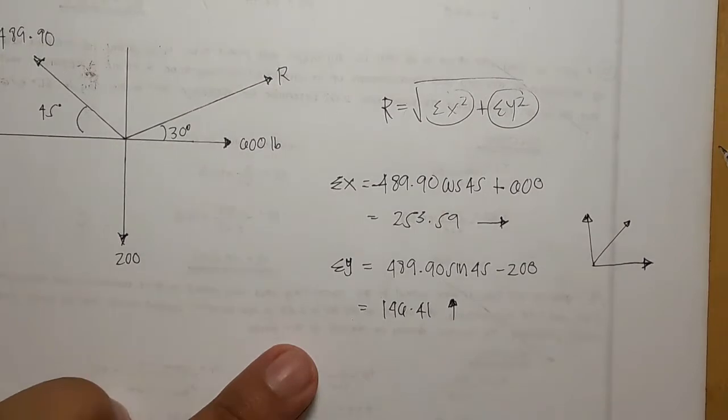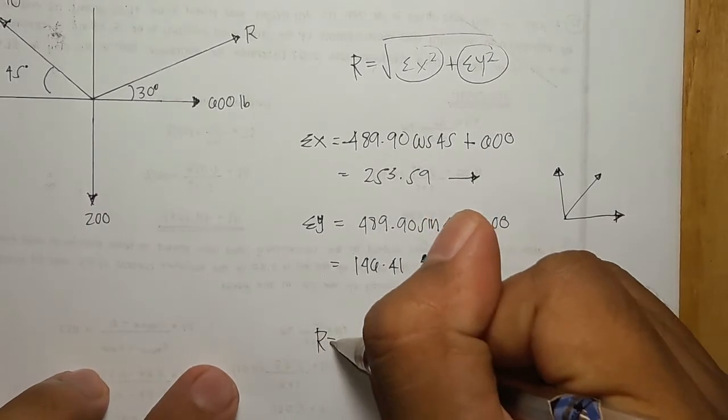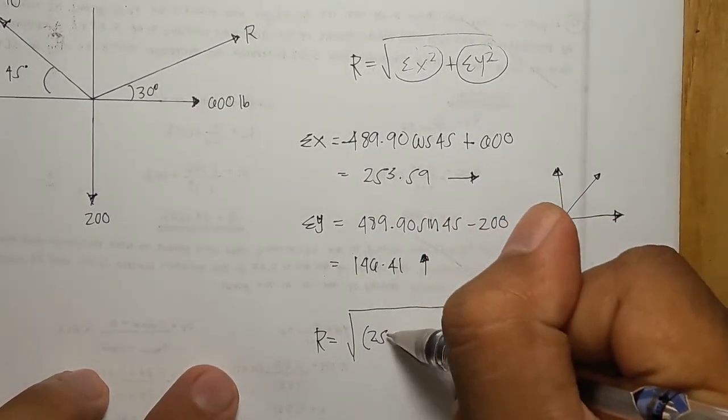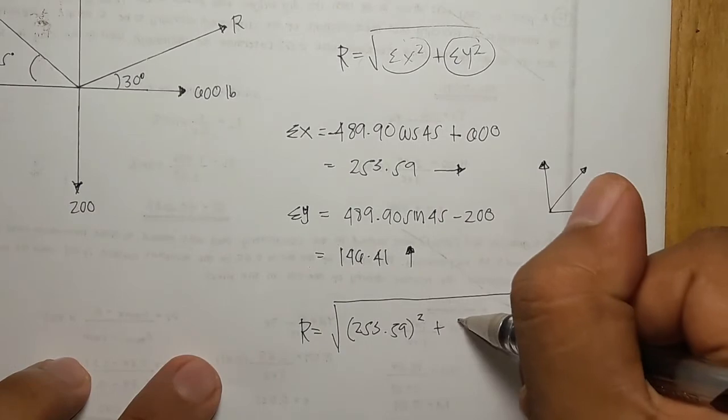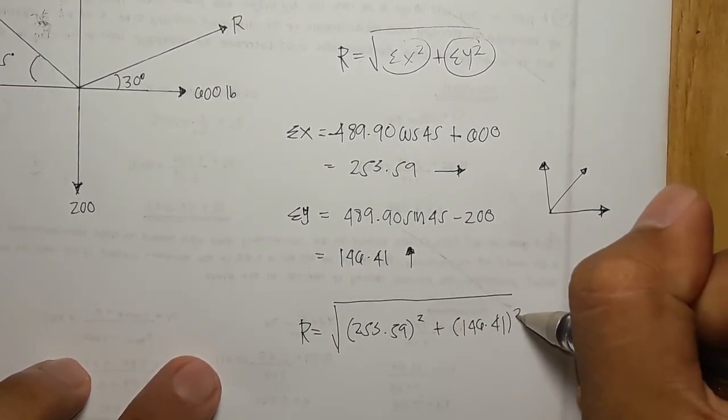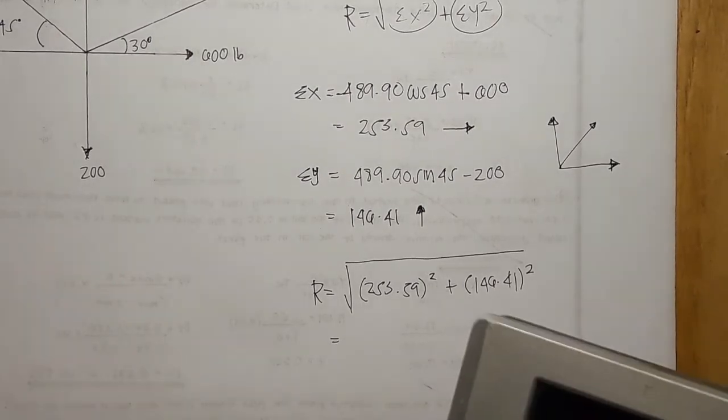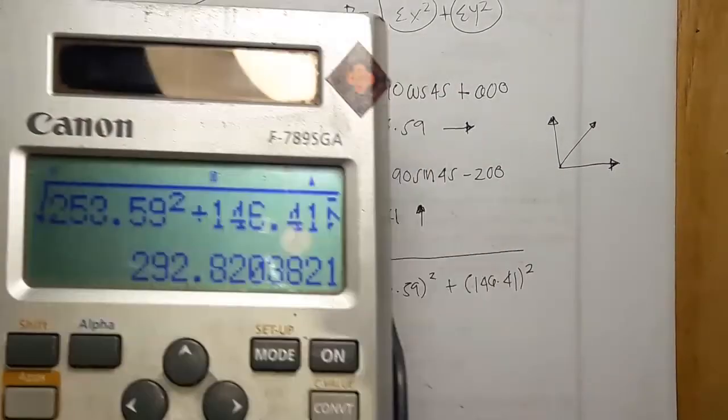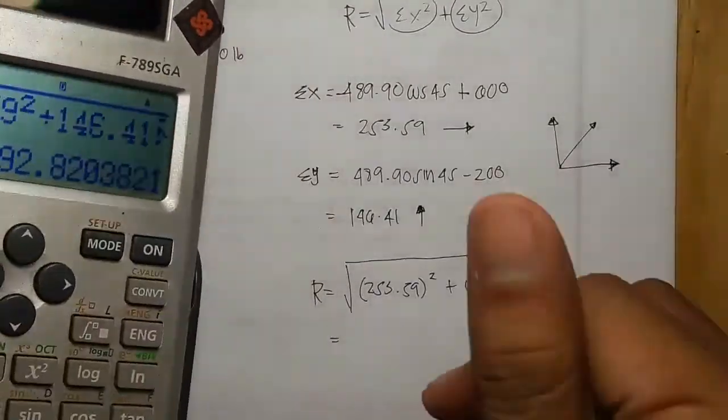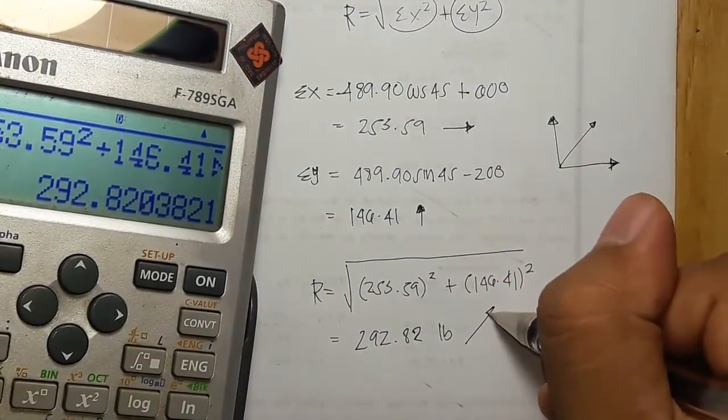Now we can use the formula to solve for R. R is just equal to the square root of 253.59 squared plus 146.41 squared. Our resultant is 292.82 pounds up right.